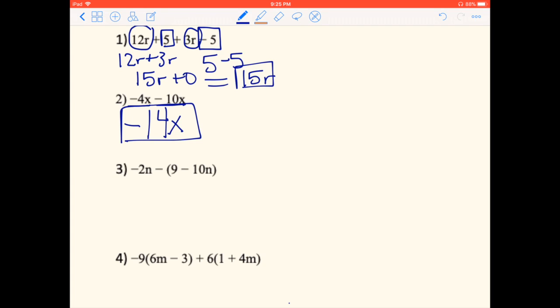This one's kind of a tricky one because we're going to have to do some distribution with it. So negative 2N minus parentheses 9 minus 10N. This is something we haven't come across before, we're distributing this negative number. When we have this negative sign in front of the parentheses, there is an invisible 1 there. So I always just add in that invisible 1 so it just makes it easier for me to understand. Before we do any combining like terms, we've got to distribute.